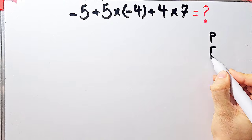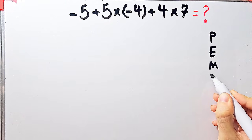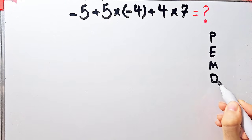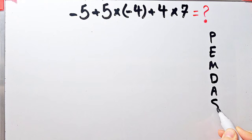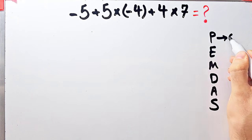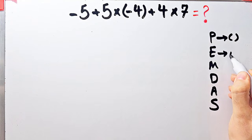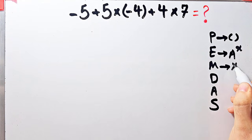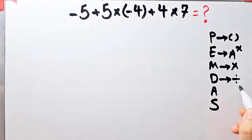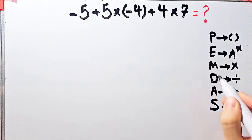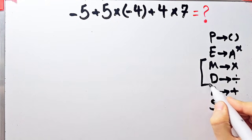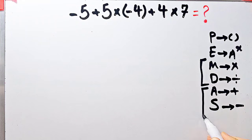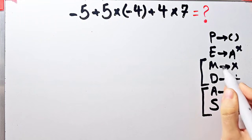To solve this question we need to follow the order of operations, which is PEMDAS. PEMDAS shows the priority of mathematical operations. P stands for Parentheses, E for Exponent, M for Multiplication, D for Division, A for Addition, and S for Subtraction. Multiplication and division have the same level of priority; likewise addition and subtraction.